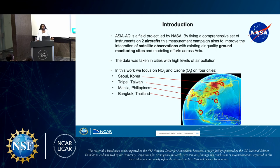The cities chosen are highly urbanized Asian cities with high levels of air pollution. In this work, we focus on NO2 and ozone in four cities: Seoul, Korea; Taipei, Taiwan; Manila, Philippines; and Bangkok, Thailand.